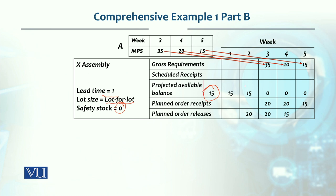In the first and second week, because there is no requirement, this inventory will continue. In the third week, there are 35 units required but we have only 15 units. The shortfall is 20 units. Because production is lot-for-lot, we order exactly 20 units.